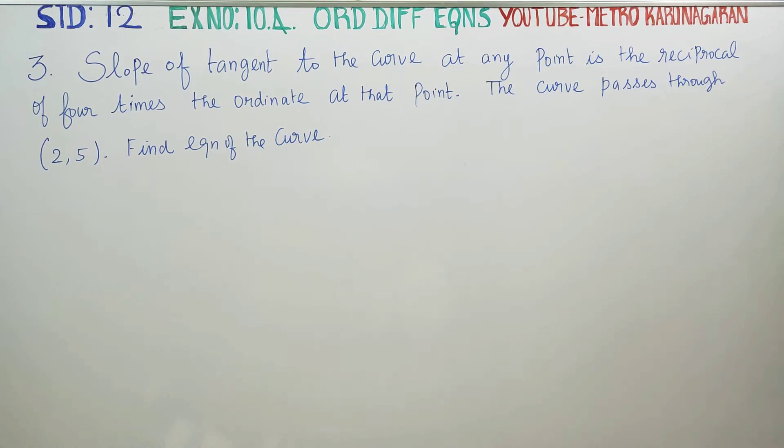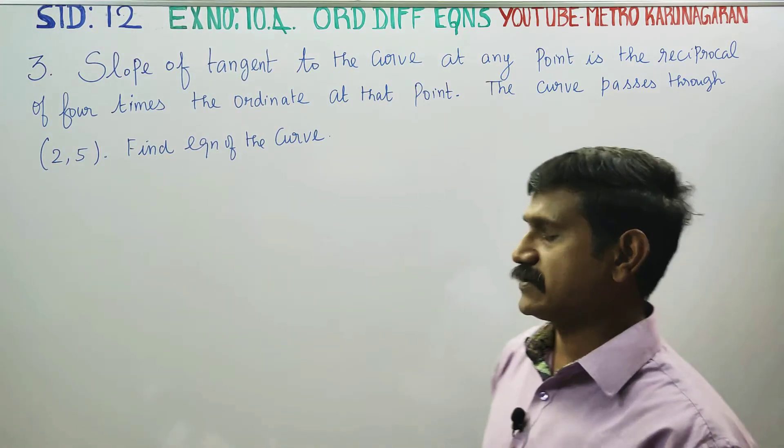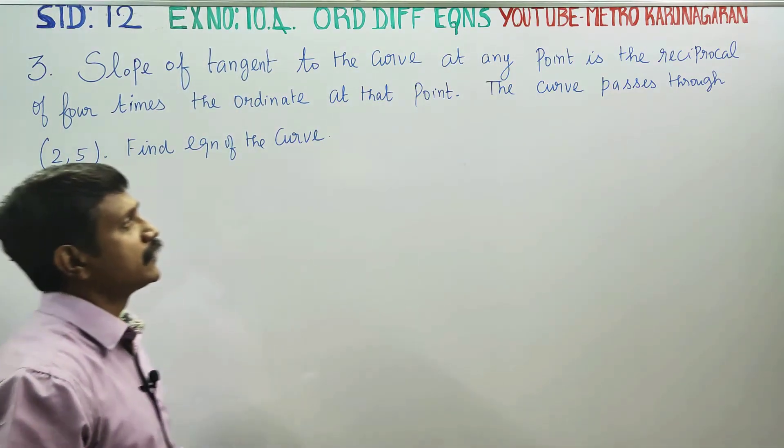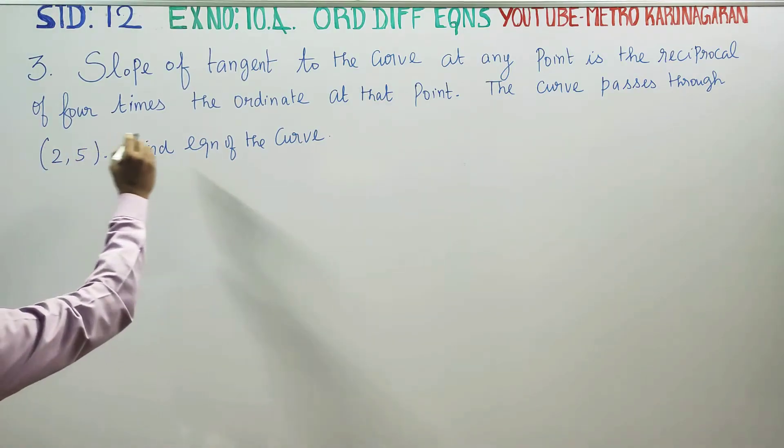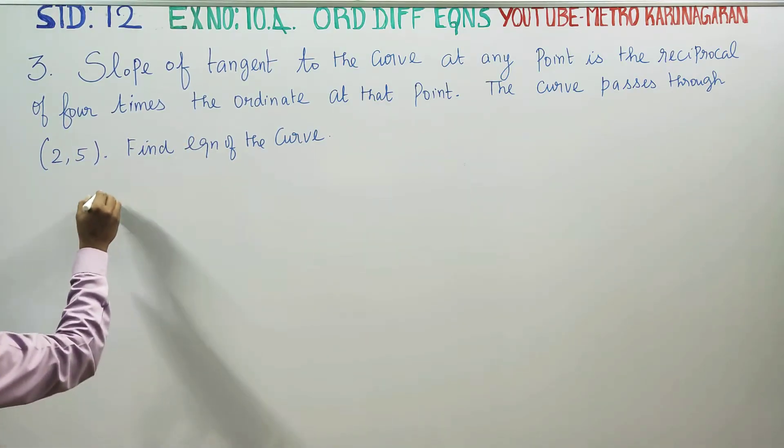Dear 12 standard students, in exercise number 10.4 sum number 3, the slope of the tangent to the curve at any point is reciprocal of 4 times the slope.